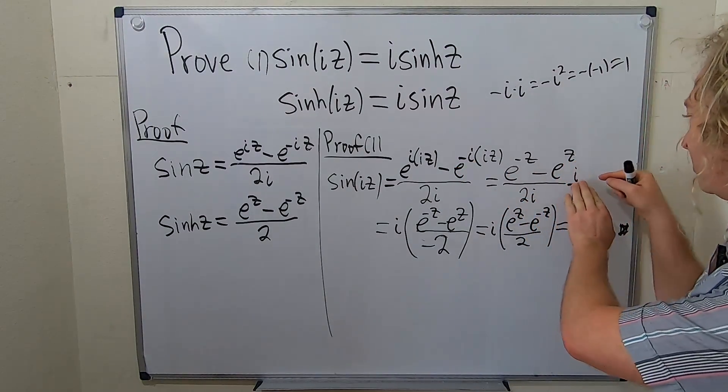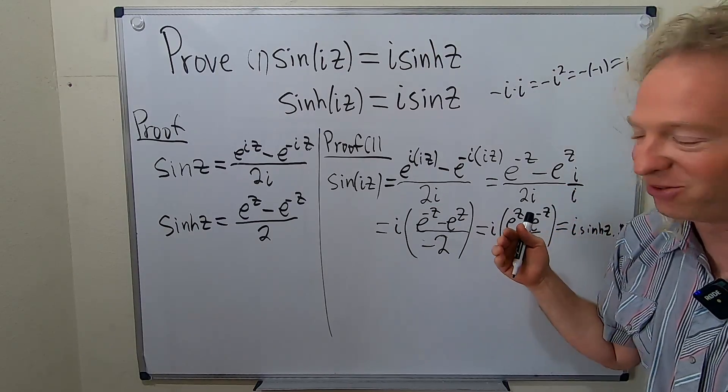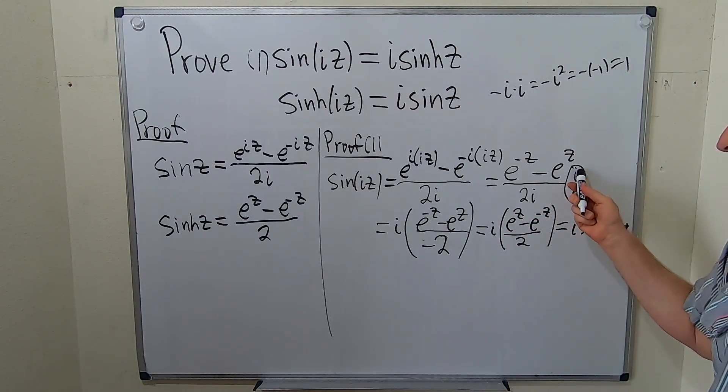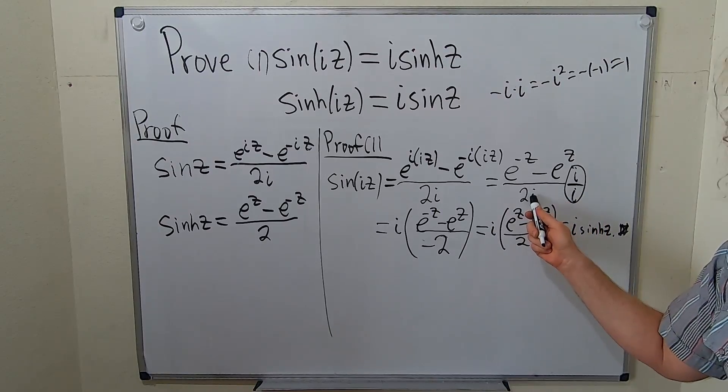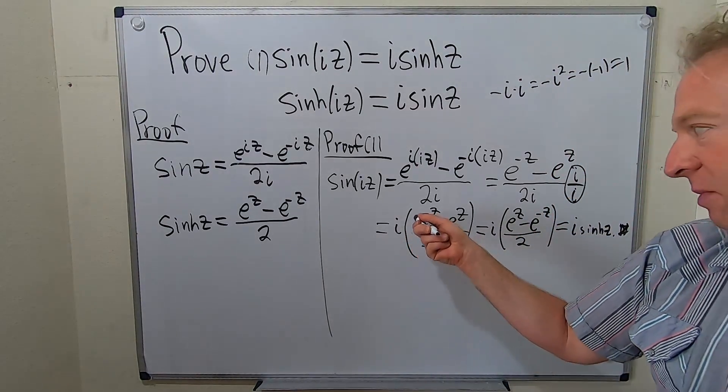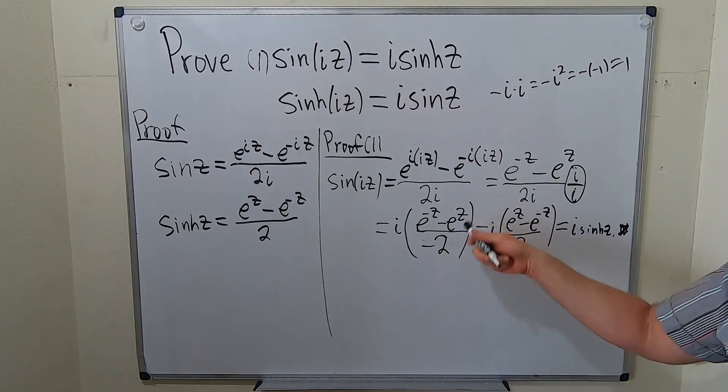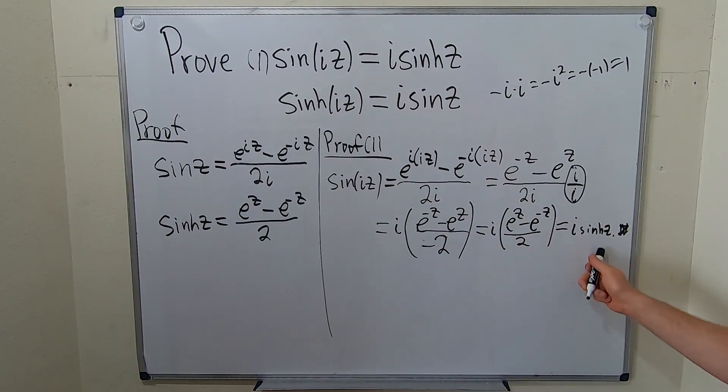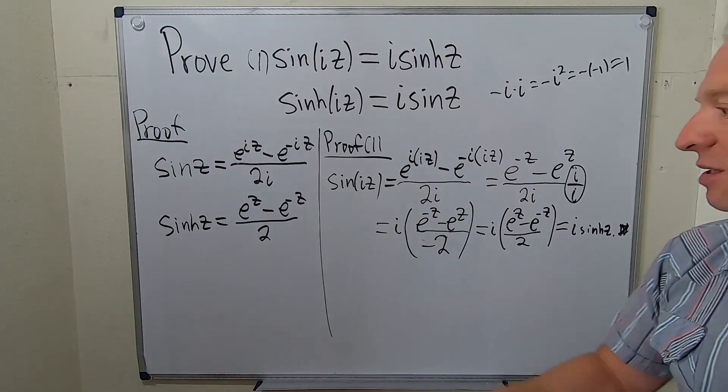It's tempting to just multiply by i, but you can't do that. But you can multiply by 1 in a clever way. This i, we pulled it out. i times i is i squared. That gives you negative 1. Then you can distribute it upstairs. So this becomes negative. This becomes positive. And there it is. That's the definition of sinh z. So sin iz is equal to i sinh z.